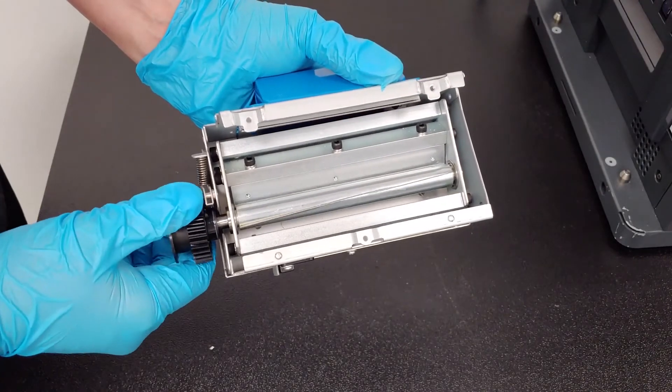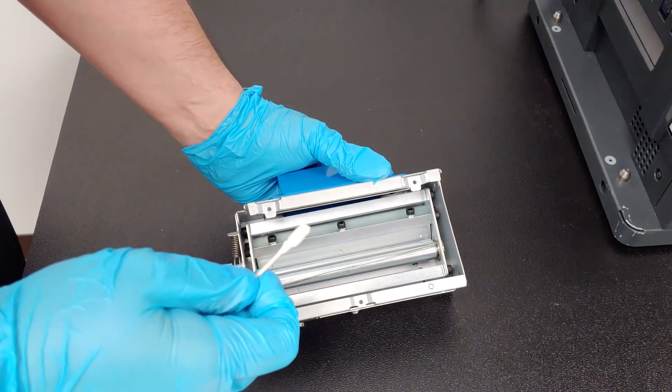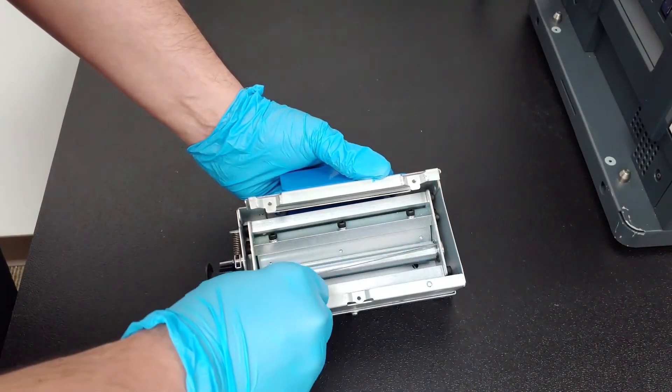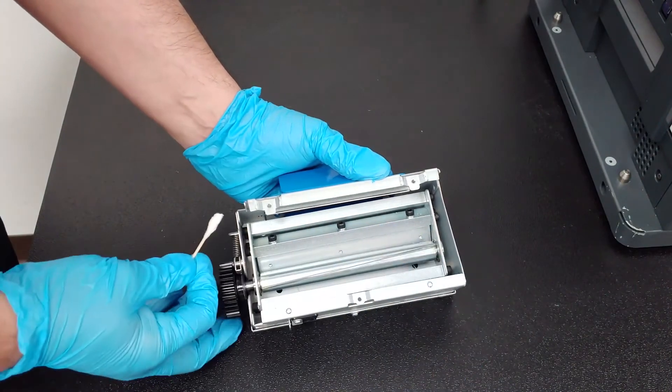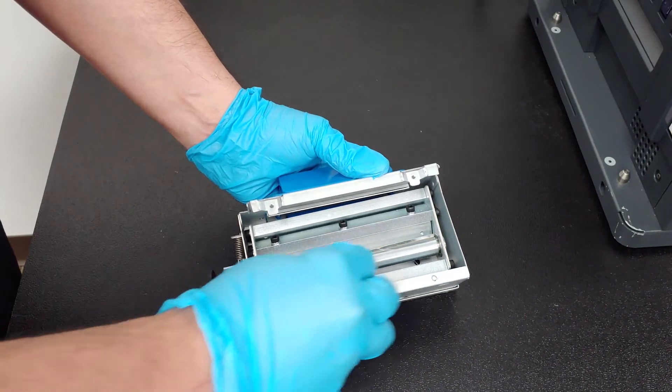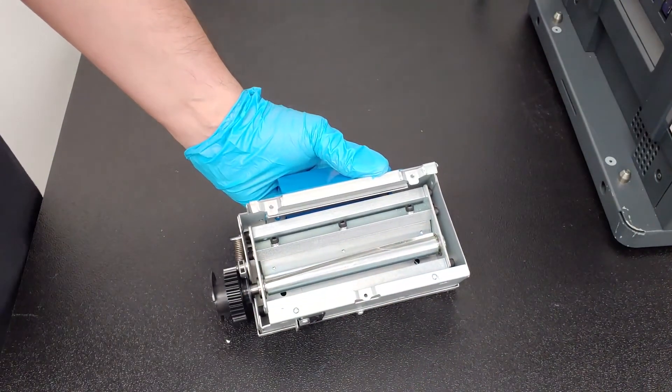Inspect the area above and below the circular cutter blade. Remove any small pieces of the label by using tweezers. Do not place your fingers directly in the area of the blade to avoid injury. Using a cotton swab soaked with isopropyl alcohol, wipe the surface of the blade while rotating the blade with the plastic gear.